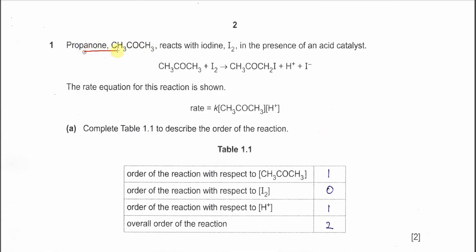Propanol reacts with iodine in the presence of an acid catalyst. The rate equation given is: rate = k × [propanol] × [H⁺]. From this, propanol is first order (power 1), hydrogen ion is first order (power 1), and iodine is zero order (power 0).